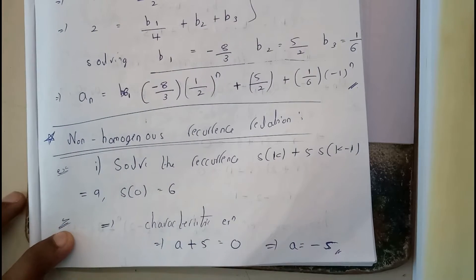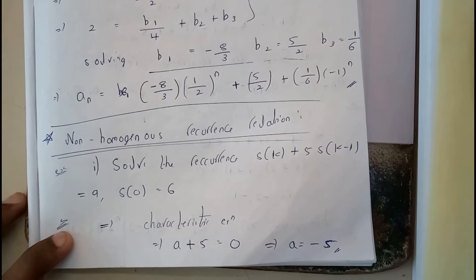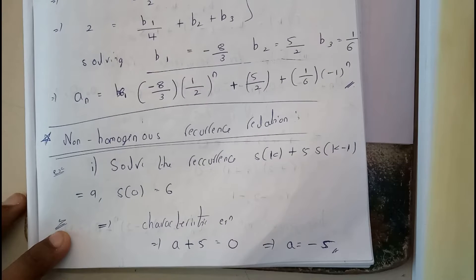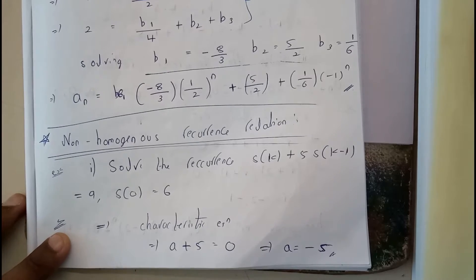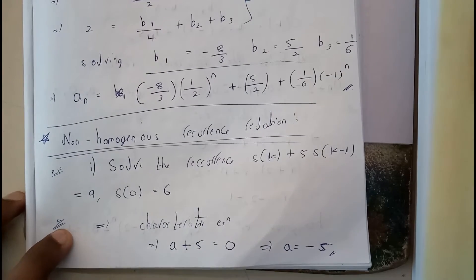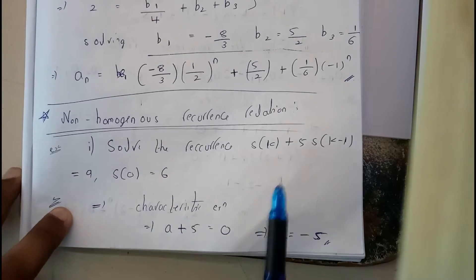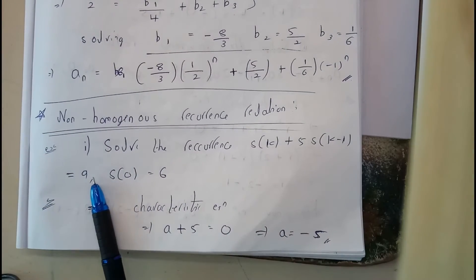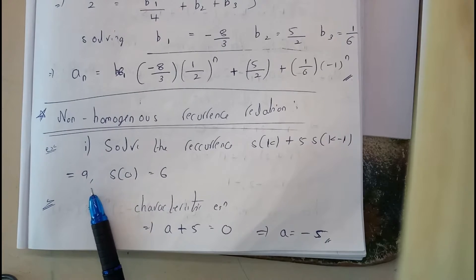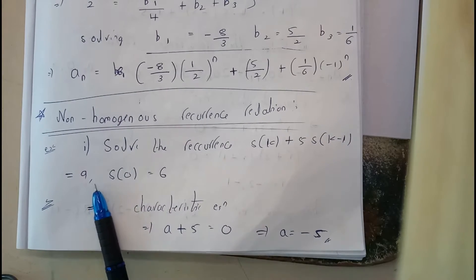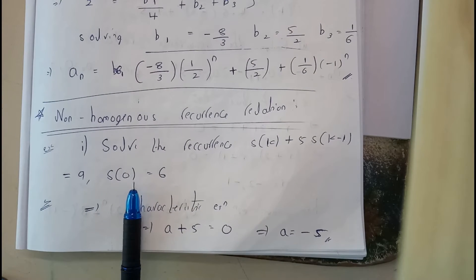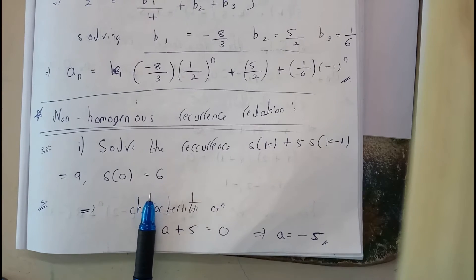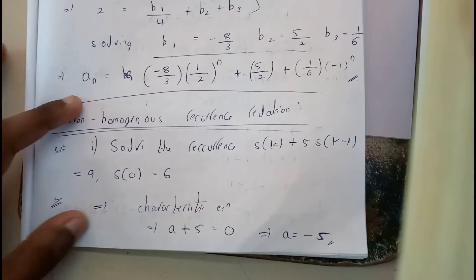In this tutorial, let's see all about non-homogeneous recurrence relations. In the previous video on the introduction of homogeneous recurrence relations, I told you what a non-homogeneous recurrence relation is. A non-homogeneous recurrence relation is something that equals some constant value — here we are having 9, in another case 10, 11, or any constant. Remember, 3 to the power k is also a constant.